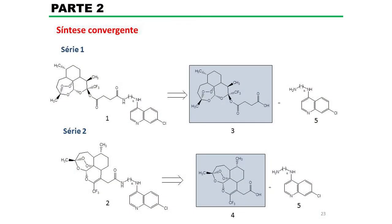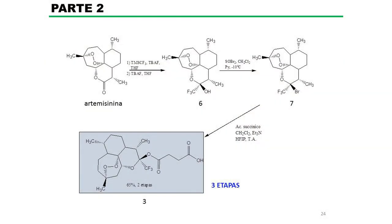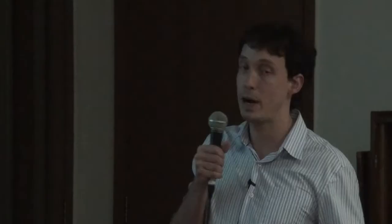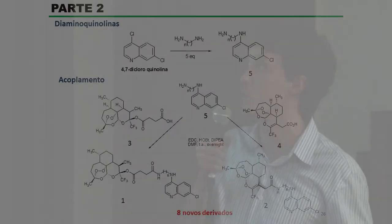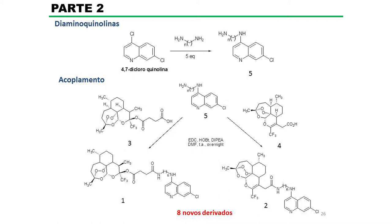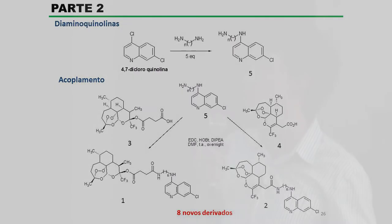Esses derivados foram sintetizados de maneira convergente, onde a etapa-chave foi a reação entre um ácido derivado da artemisinina com uma aminoquinolina. A substância 3 seria o intermediário-chave para os derivados da primeira série, obtido em três etapas e bons rendimentos a partir da artemisinina. A substância 4 seria o intermediário-chave para a segunda série, obtida em seis etapas e rendimentos satisfatórios. As aminoquinolinas foram obtidas a partir da reação da 4,7-dicloroquinolina com a respectiva diamina. E os derivados desejados foram obtidos em uma etapa de acoplamento peptídico, utilizando condições clássicas para essa reação.